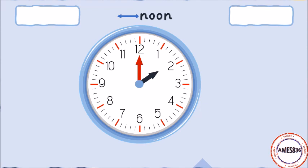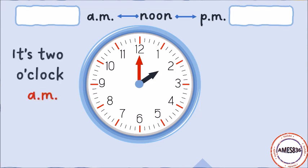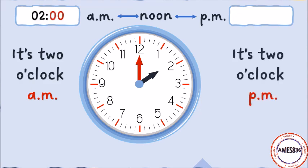Hours before noon are called a.m., which comes from the Latin ante-meridiem, which means before midday. Hours after noon are called p.m., which comes from the Latin post-meridiem, which means after midday. We use a.m. for the morning and p.m. for the afternoon and night. Examples: It's two o'clock a.m. It's two o'clock p.m.